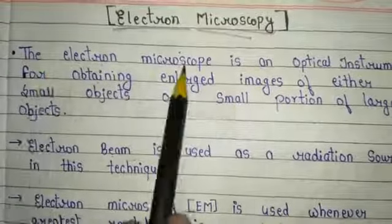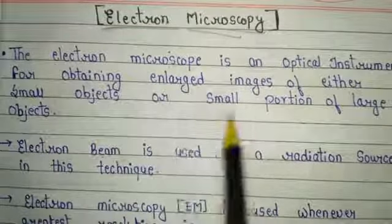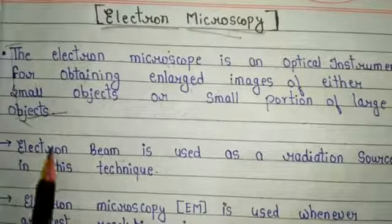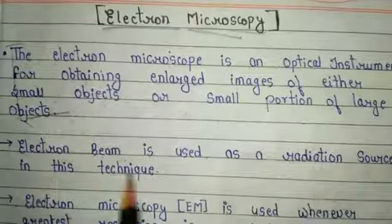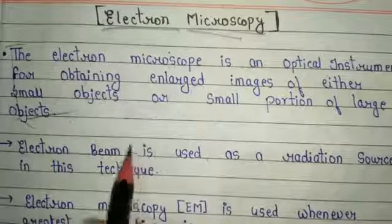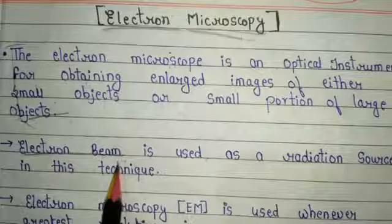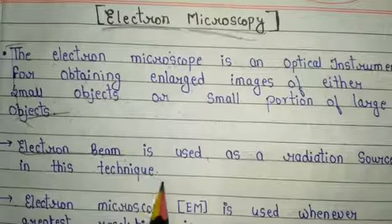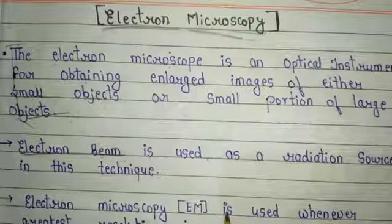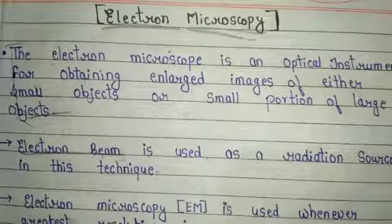The electron microscope is an optical instrument for obtaining an enlarged image of either a small object or a small portion of a large object. Electron beam is used as a radiation source in this technique — that is why it is called electron microscopy. Because of the electron beam, we can find out the ultrastructure of our samples.